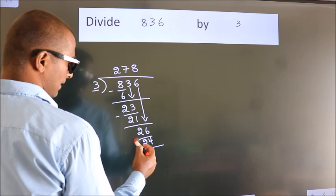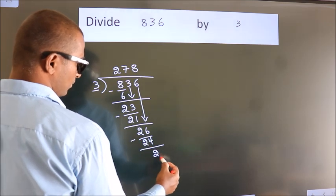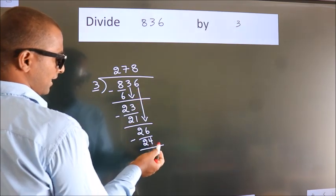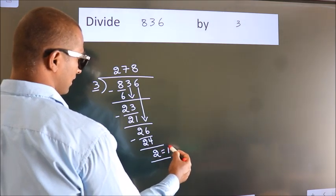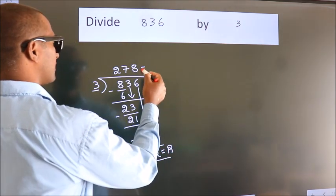Now we subtract. We get 2. No more numbers to bring down. So we stop here. This is our remainder. This is our quotient.